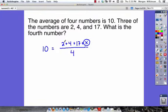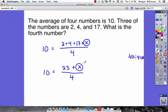Let's simplify here first. 2 plus 4 is 6, and 6 plus 17 is 23. So we have 10 is equal to 23 plus x divided by 4. Now, you tell me. What number divided by 4 is equal to 10? Well, hopefully you said 40, because 40 divided by 4 is equal to 10. So what that means is we have to make this top 40.